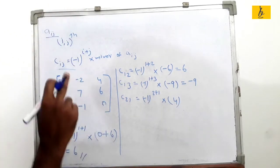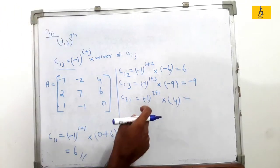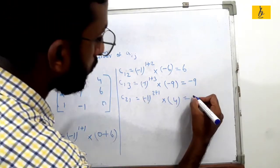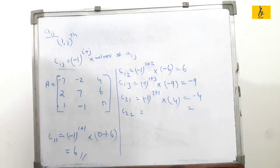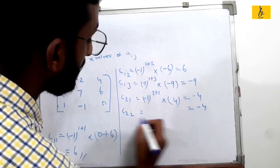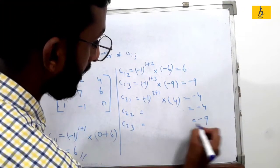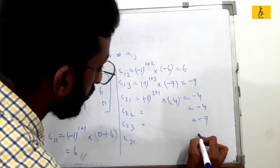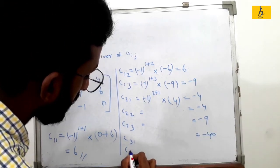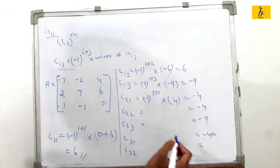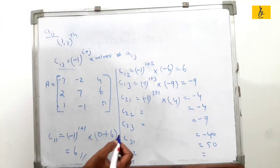Continuing: the answer works out with minus 1 raised to 5 equals minus 1, into 4 gives minus 4. So C_21 equals minus 4. C_22 cofactor is minus 4. C_23 cofactor is minus 9. C_31 cofactor is minus 40. C_32 cofactor is 50. C_33 cofactor is minus 45.